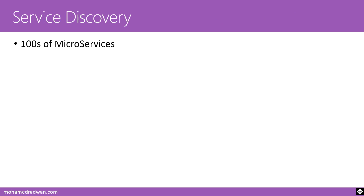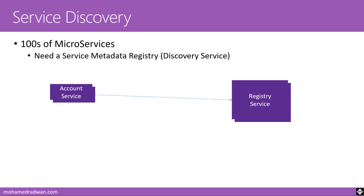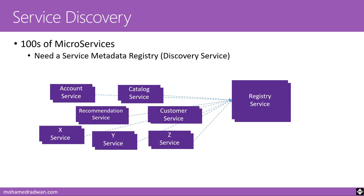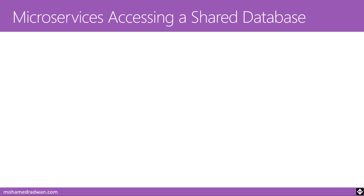When you have 100 or more microservices, you need a service catalog or service discovery. Services such as account services, recommendation services, and customer services are registered in a service registry or catalog, where you can understand how many services you have and what they are. It is very important when designing and modernizing your application to have service discovery or a service catalog with metadata for your services.